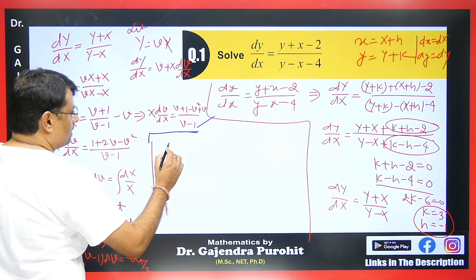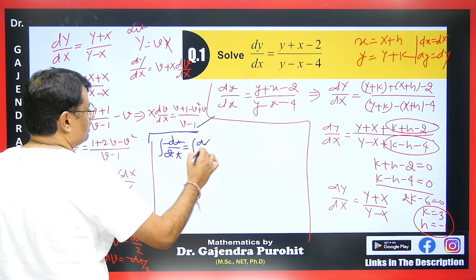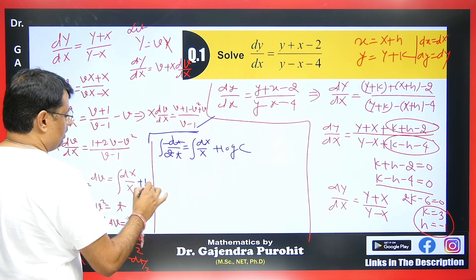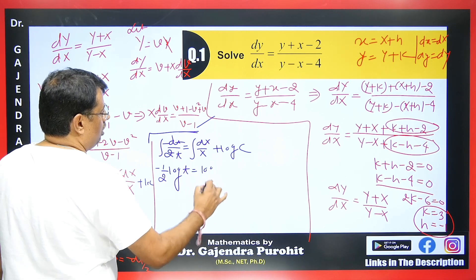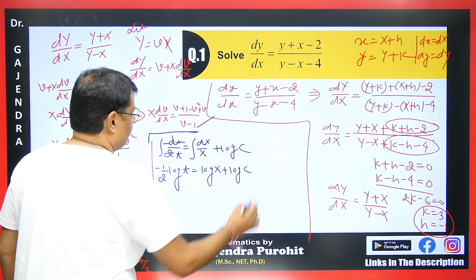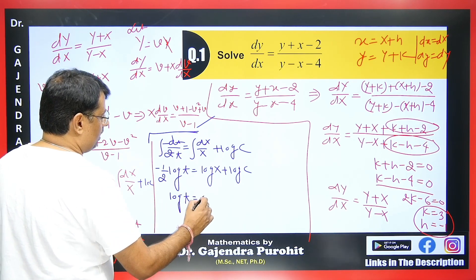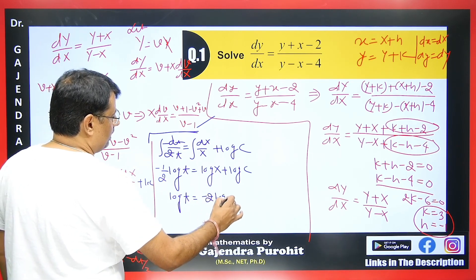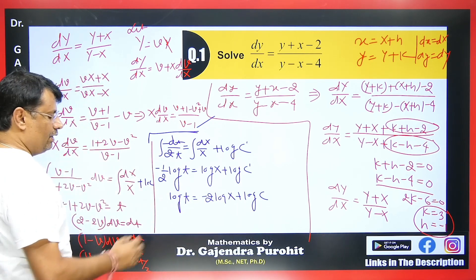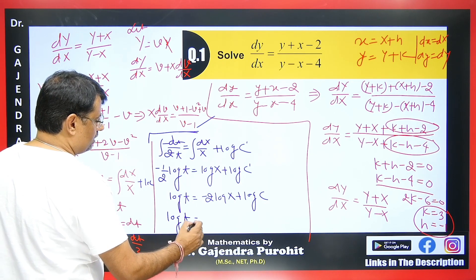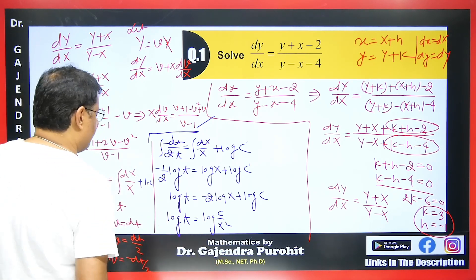Integrating both sides: -dt/(2t) = dX/X + log C. Integrating gives -(1/2)·log t = log X + log C. Rearranging: log t = -2·log X + constant, which gives log t = log(C/X²). Cancelling the logs: t = C/X², so X²·t = C. Since t = 1 + 2v - v², we have X²(1 + 2v - v²) = C.